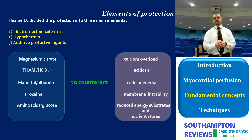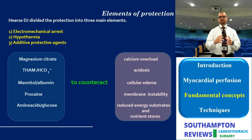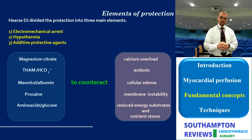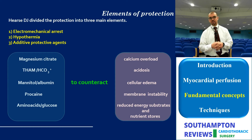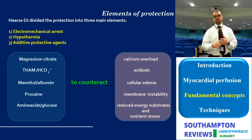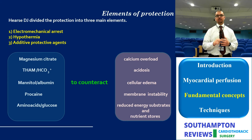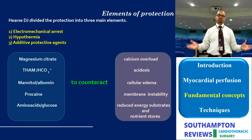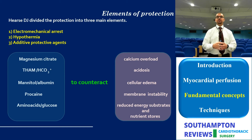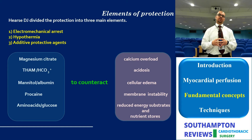One of the first to look into this and produce very important concepts in myocardial protection was Hearse J, in his book published in 1981 titled 'Protection of Ischemic Myocardium.' He outlined three pillars of protection: one — electromechanical arrest; two — hypothermia; three — and most importantly — protective additive agents. During ischemia, a lot of side effects are triggered, and the cardioplegic solution itself causes many side effects, requiring additive protective agents to counteract them. He argued that the initial concept had failed because it neglected this.